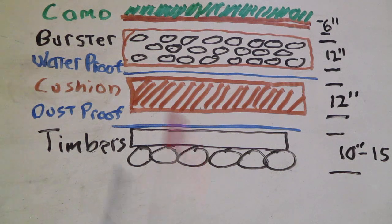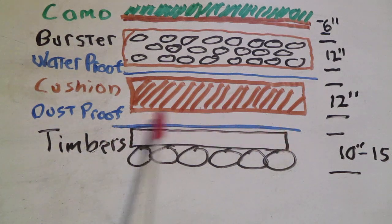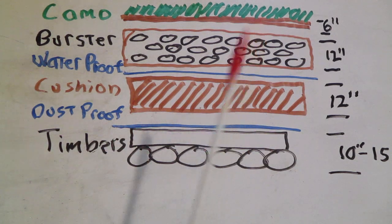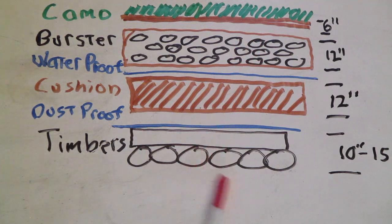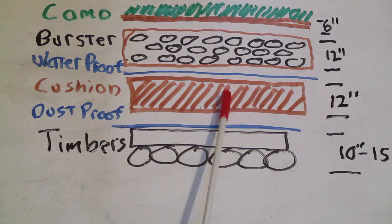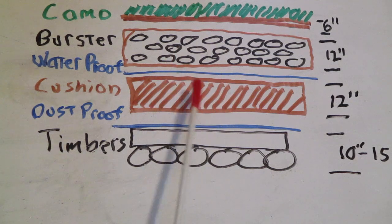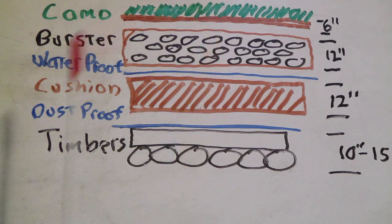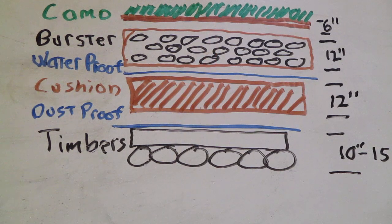Immediately above that, you're going to have your dust proof layer. The dust proof layer is tar paper, canvas, plastic sheeting, or tarps - that's just to keep dust from coming through. Above that, you're going to have a cushion layer that's going to be at least 12 inches of untamped earth, just earth, no rocks, no gravel. This is going to cushion the blast that happens above it.